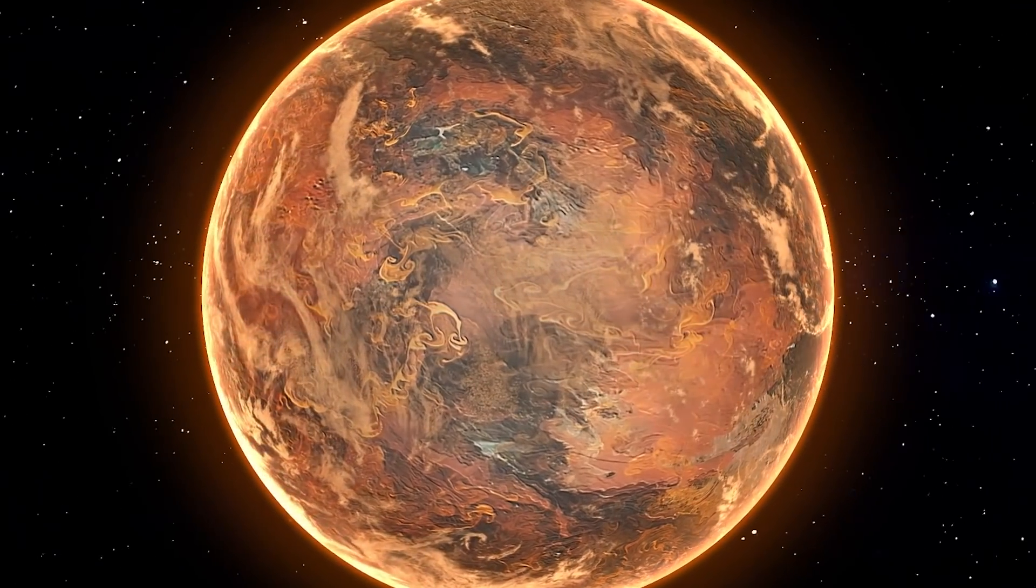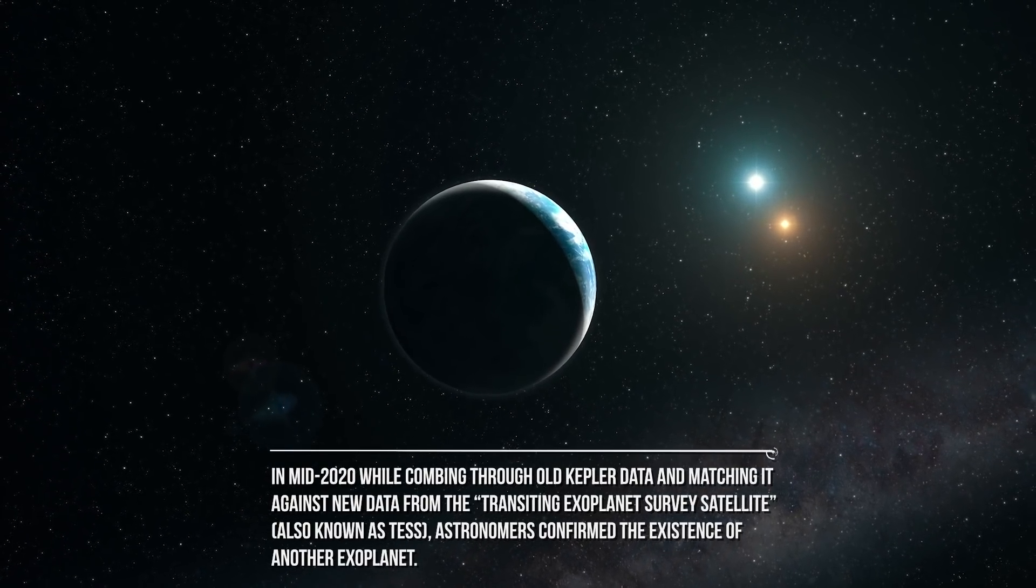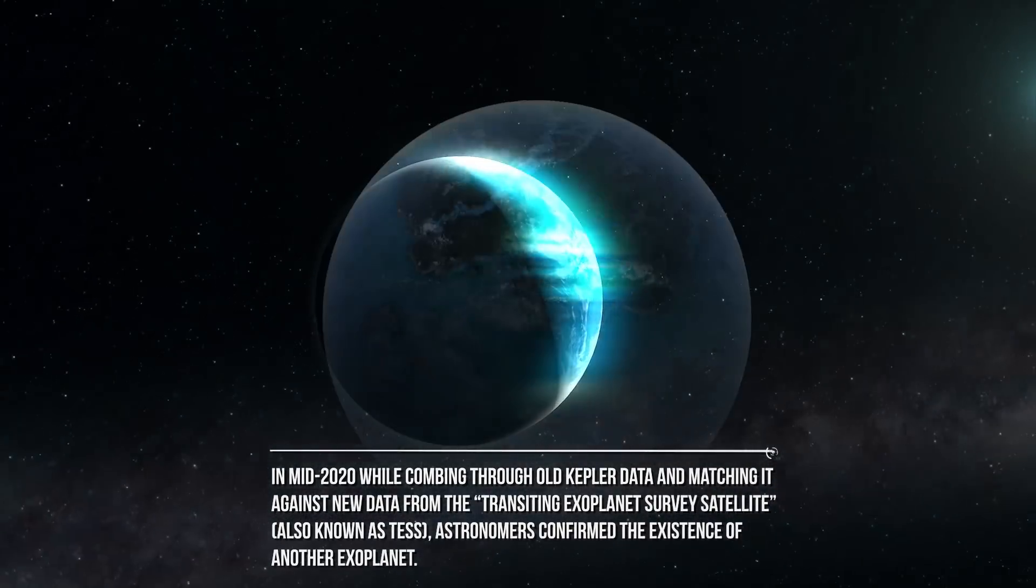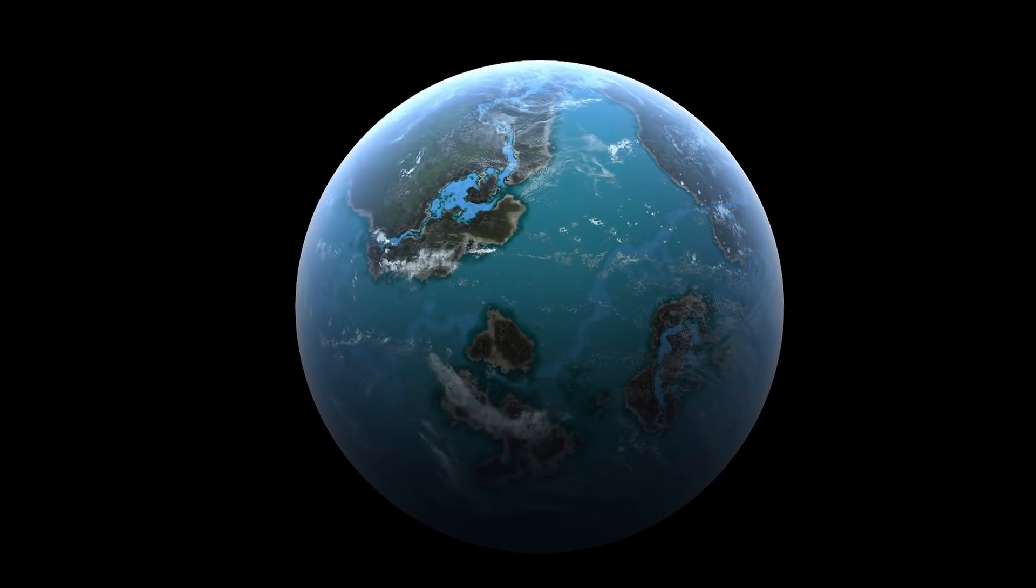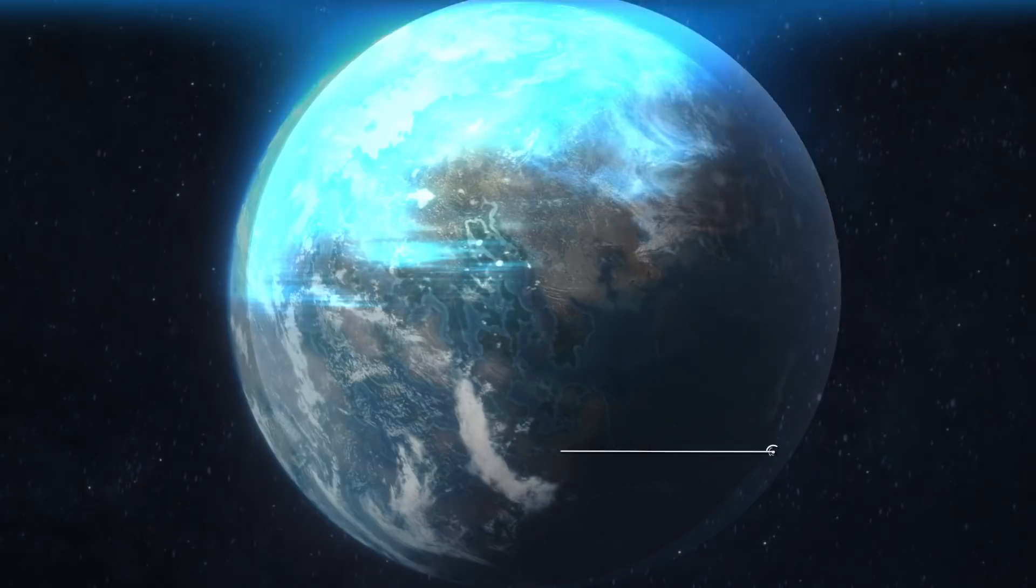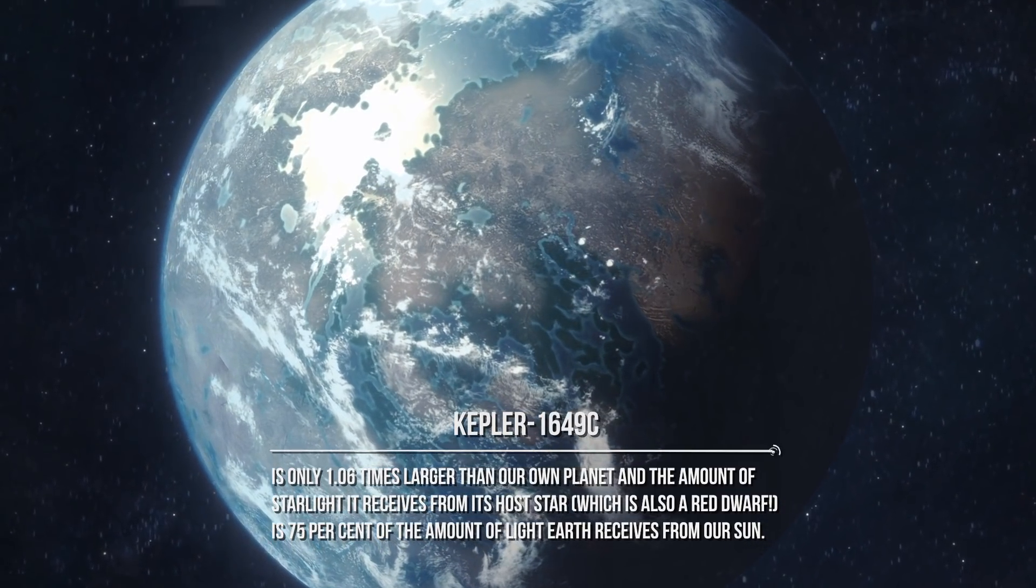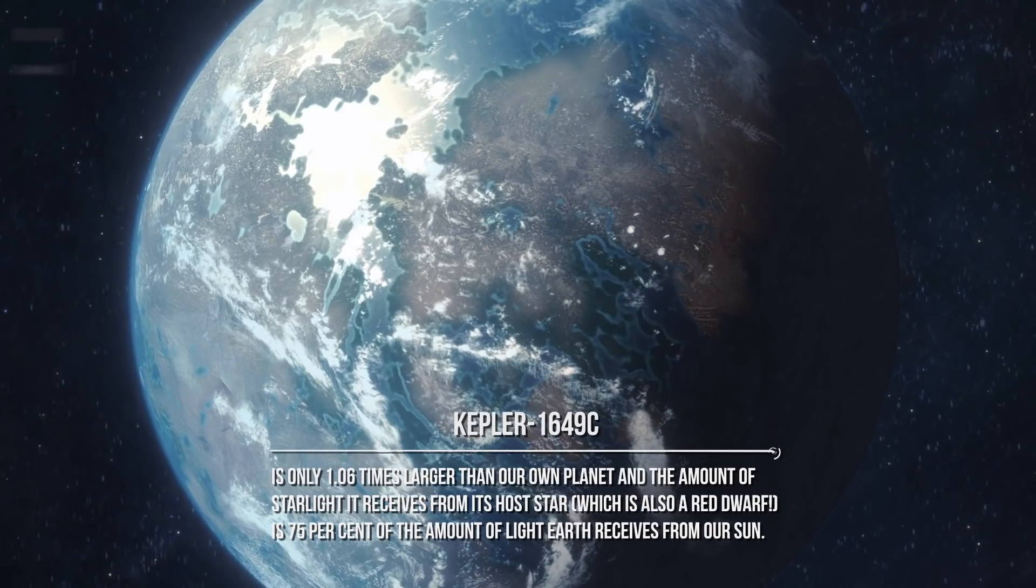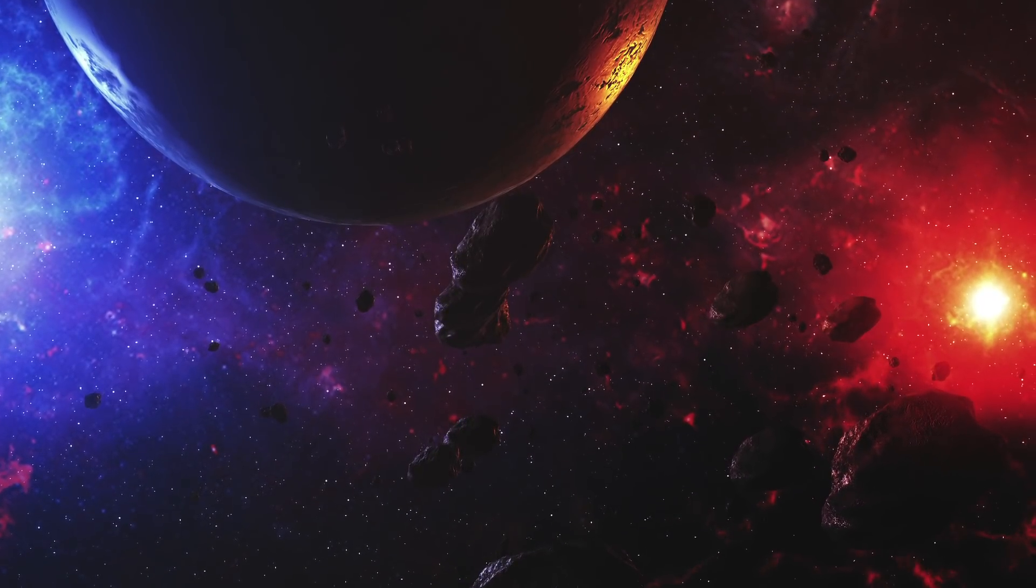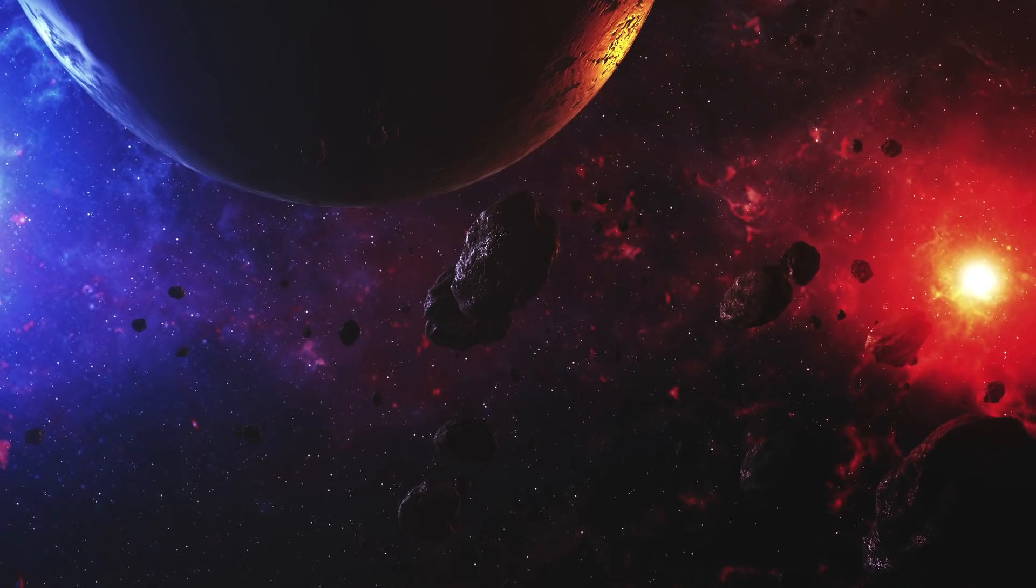One such planet is Kepler-1649c. In mid-2020, while combing through old Kepler data and matching it against new data from the Transiting Exoplanet Survey Satellite, also known as TESS, astronomers confirmed the existence of another exoplanet with very favorable conditions for life. Kepler-1649c is located 300 light-years from Earth. It is very similar to Earth in size and estimated temperature. This newly revealed world is only 1.06 times larger than our own planet, and the amount of starlight it receives from its host star, which is also a red dwarf, is 75% of the amount of light Earth receives from our sun. This means the exoplanet's temperature may be similar to our planet as well. Kepler-1649c provides yet another example of an Earth-sized planet in the habitable zone of a red dwarf star.